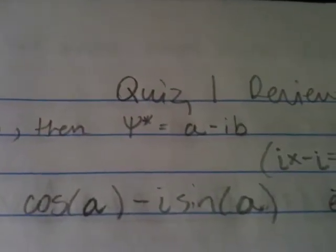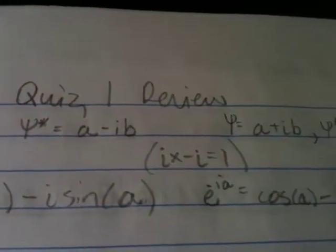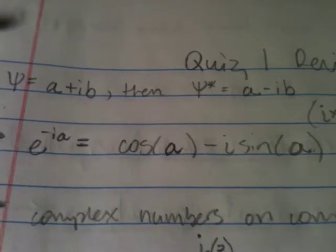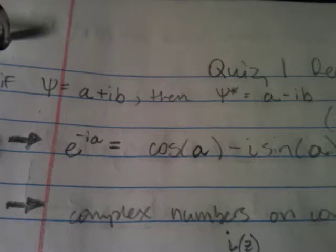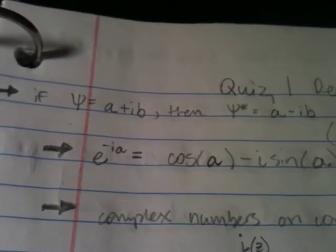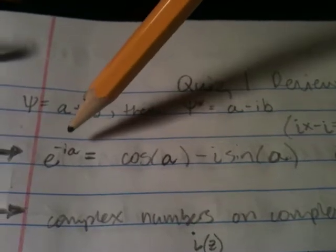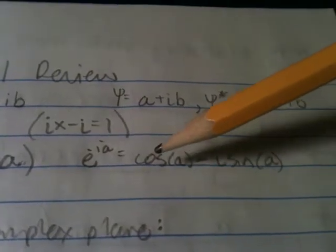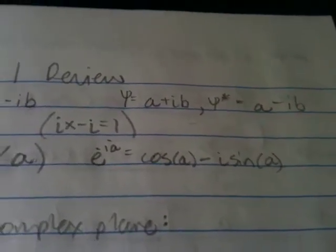then the complex conjugate is the negative imaginary term. Remember that if you take i times negative i, you get 1. So for e to the negative ia, that property is the same as cosine of a minus whatever this term is in the exponent, whatever its sign is here. The negative will be put in here. For example, if I had e to the negative ia, I'd have cosine a minus i sine a. Simple stuff.